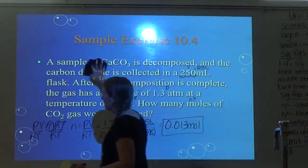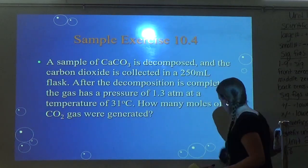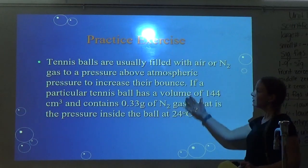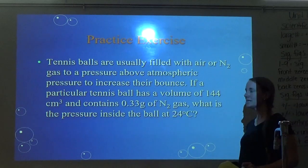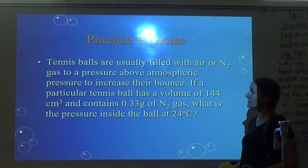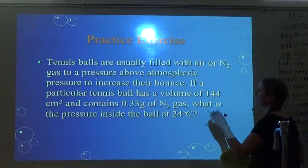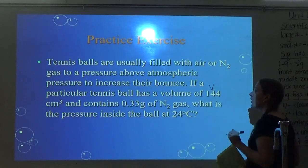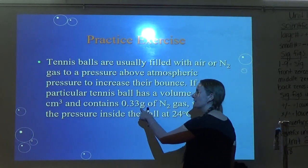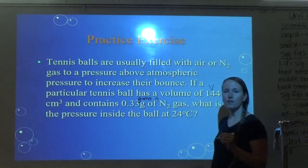Tennis balls are usually filled with air or nitrogen gas at a pressure above atmospheric to increase their bounce. If a tennis ball has a volume of 144 centimeters cubed and contains 0.33 grams of N2 gas — in the ideal gas equation, I don't have a place for grams, but I can convert to moles and plug in for N.